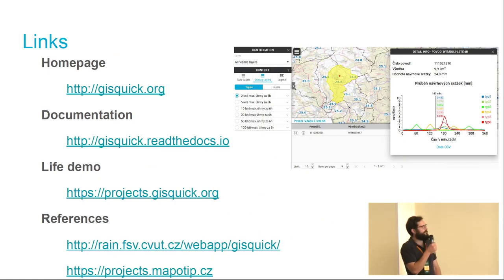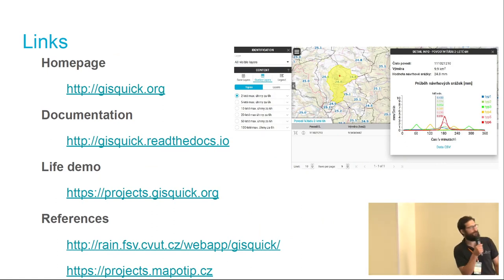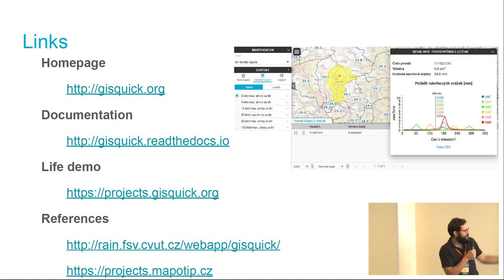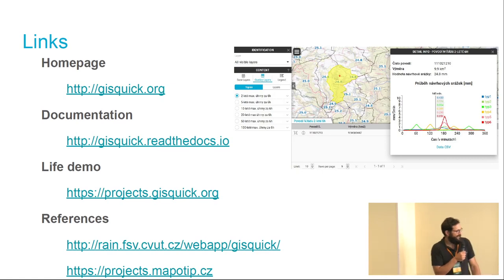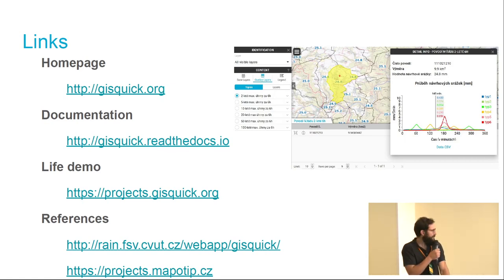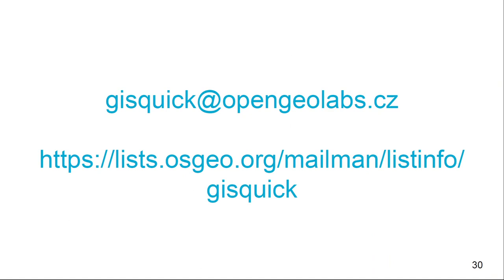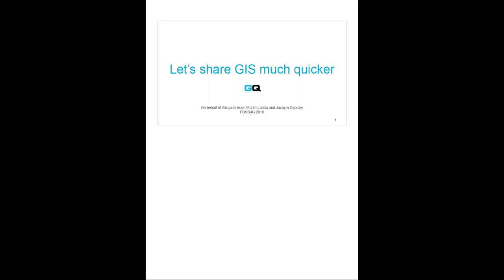Here are the links: the most important one is gisquick.org. Visit our documentation at Read the Docs. For the live demo, go to projects.gisquick.org. We have reference implementations at a university server and by a customer selling web mapping applications to local municipalities. There is also an email address and a mailing list hosted on OSGeo infrastructure — please join if you're interested. That's all, thank you.